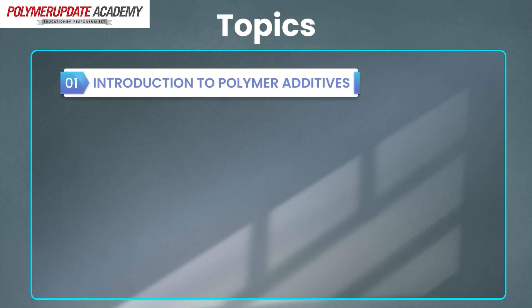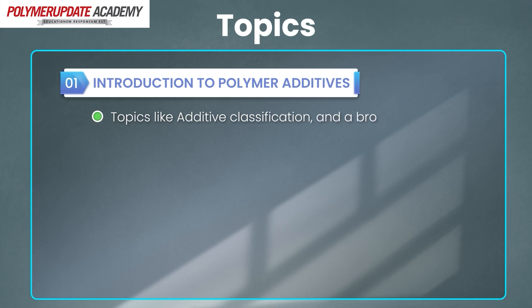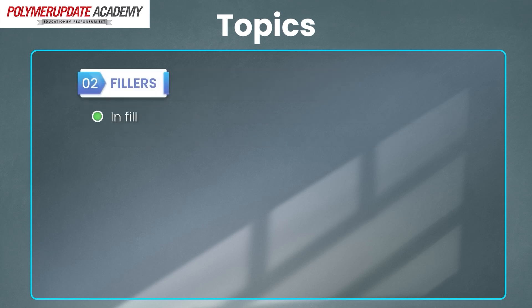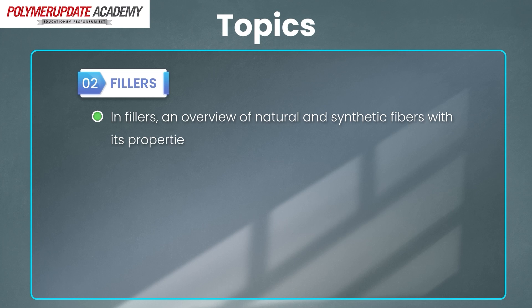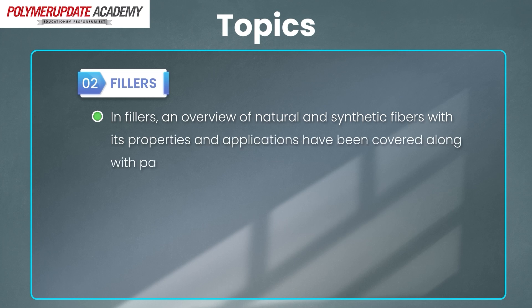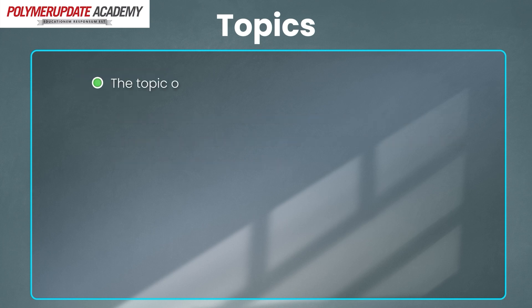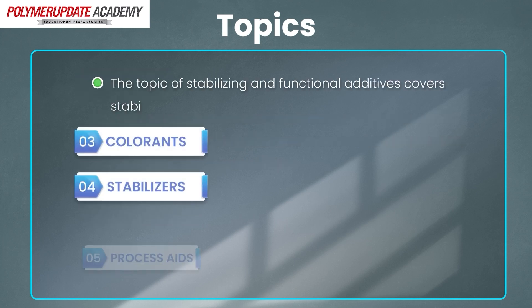In the introduction to additives, topics like additive classification and a broad overview of various additives have been explained in great detail. In fillers, an overview of natural and synthetic fibers with their properties and applications have been covered along with particulate and layered fillers. The topic of stabilizing and functional additives covers stabilizers, colorants and process aids.